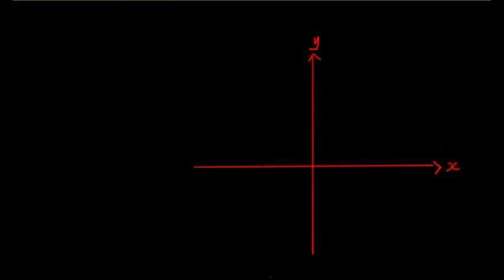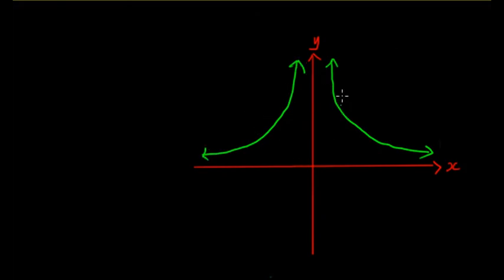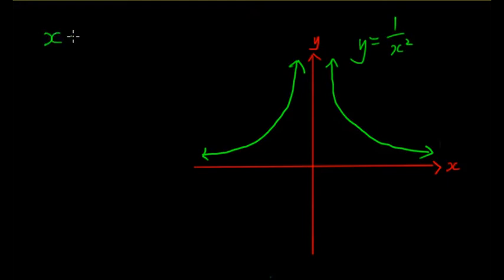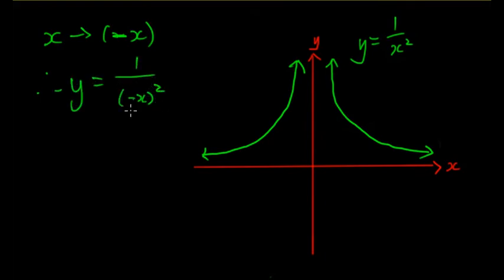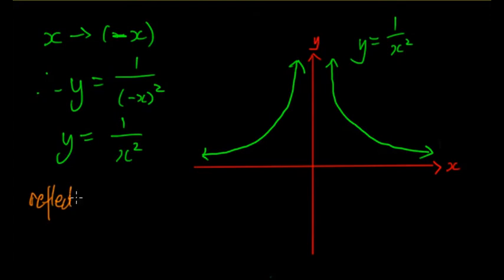For reflections, the Truncus graph looks symmetrical. We can check: if it's reflected in the y-axis, we replace x with −x, giving y = 1/(−x)². Due to the squared term, (−x)² = x², so we get y = 1/x² — the same equation. Therefore, reflecting in the y-axis has no effect on the Truncus.